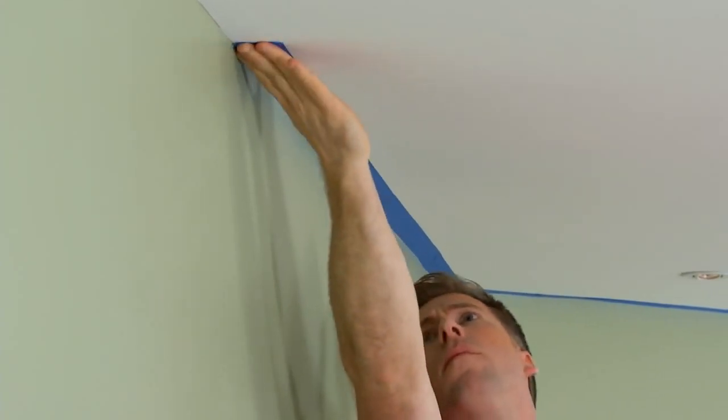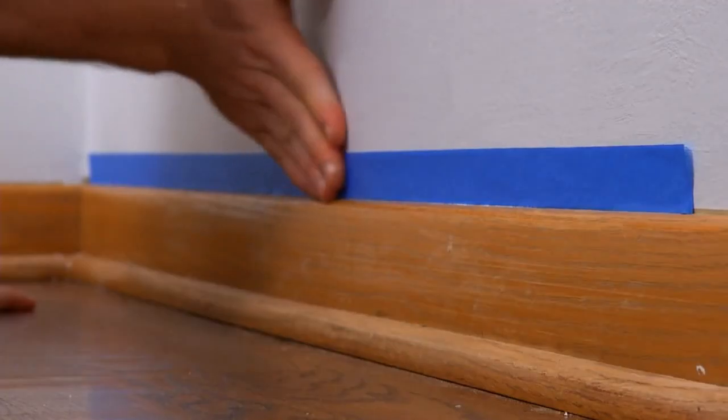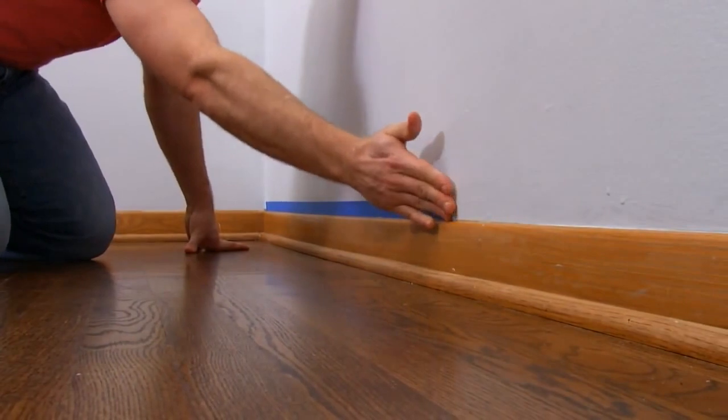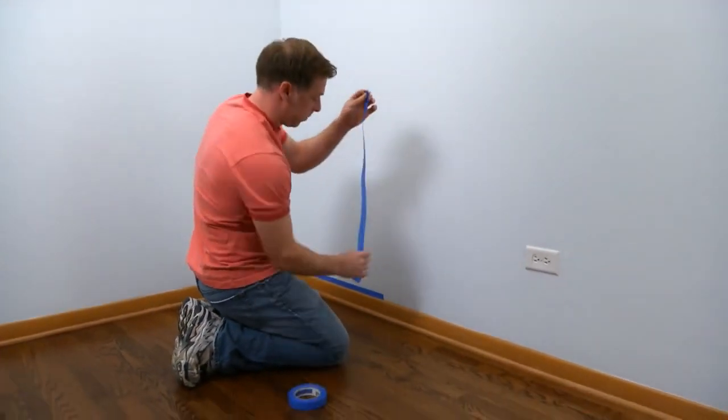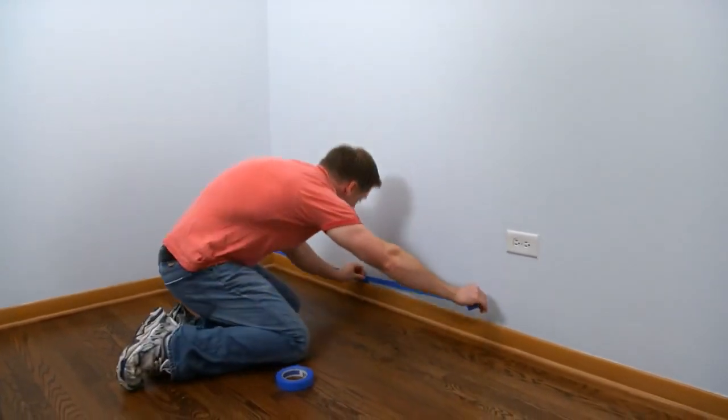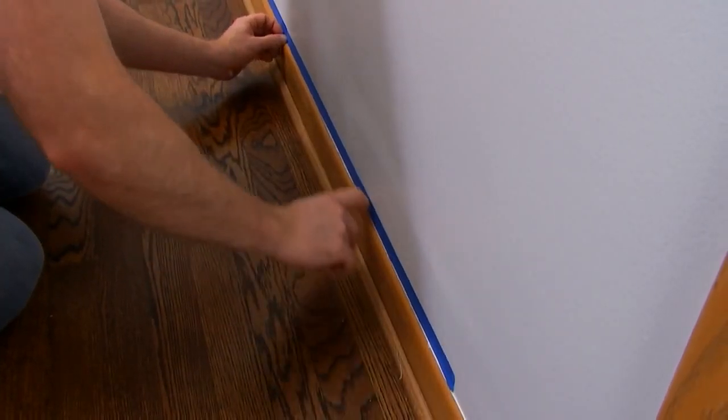Continue taping trim around windows, doors, and baseboards using long strips about the size of your arm. Only tape the areas you'll be painting today. You don't want to leave the painters tape on too long before you paint.